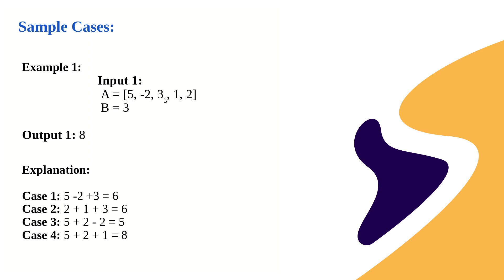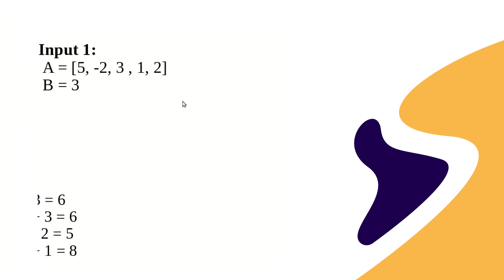For example: we start with 5 + (-2) + 3 = 6. Then we remove 3 and add 2, covering the case 5 + (-2) + 2. Then we remove -2 and add 1, then remove 5 and add 3. By doing this, we are checking all possible combinations from both ends.